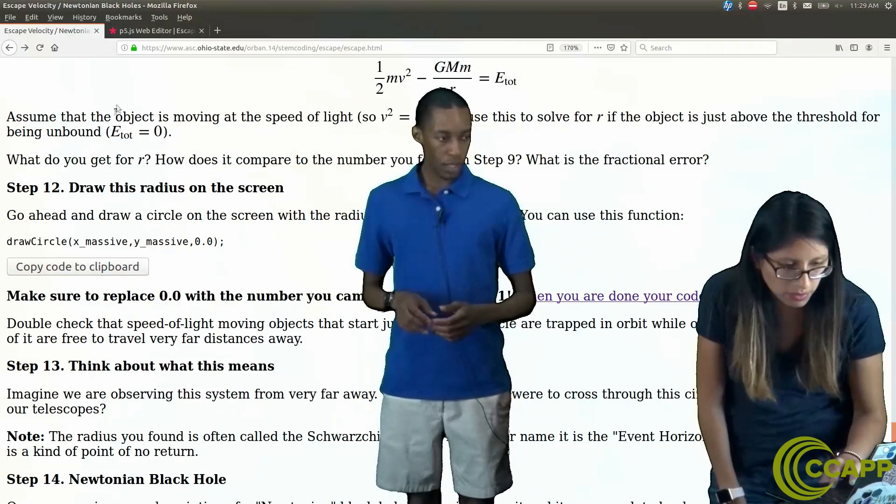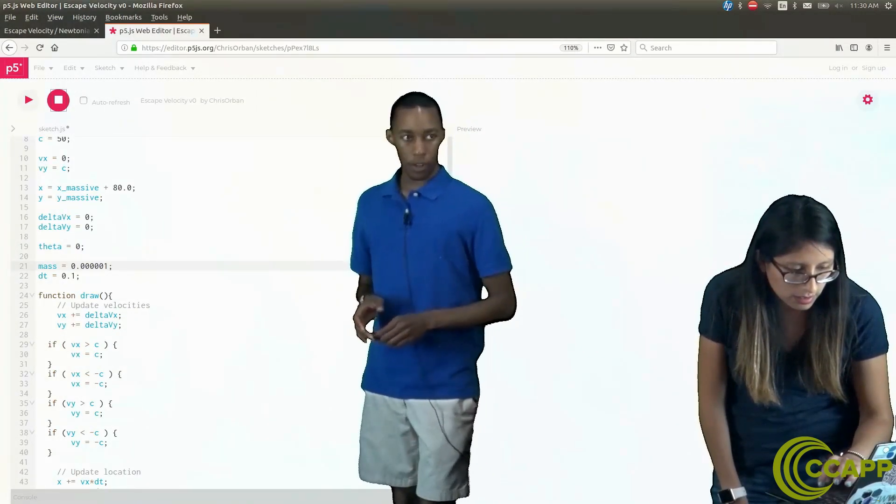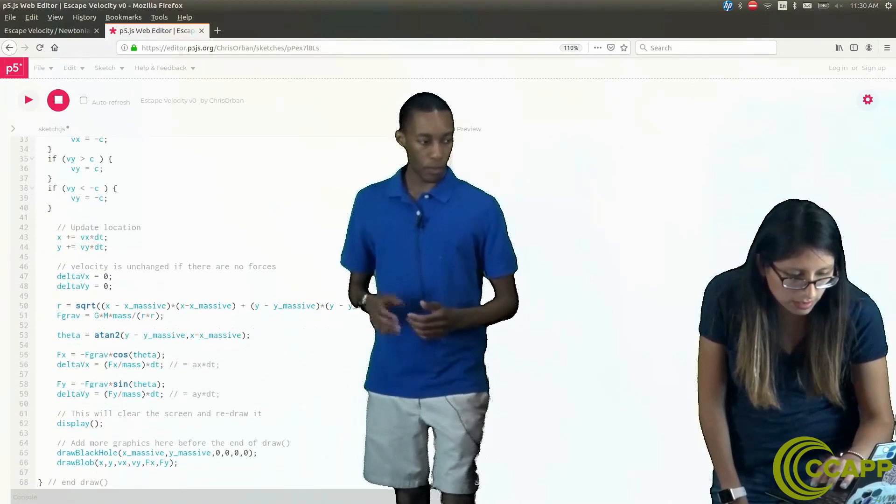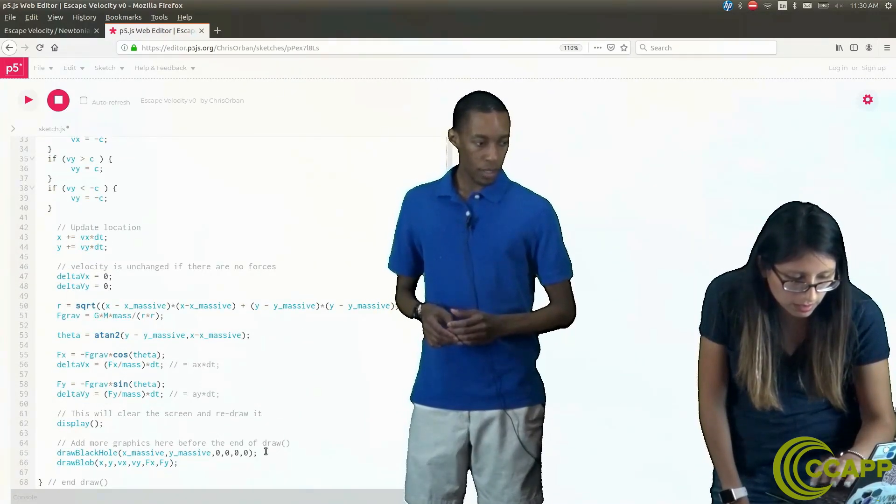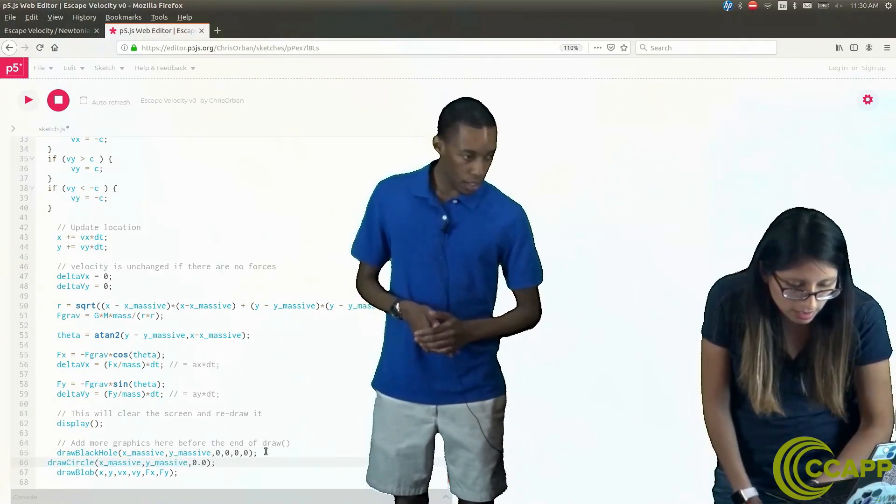Copy to clipboard. Go to our code near the bottom where we're drawing everything else like the black hole and our object, and control paste.